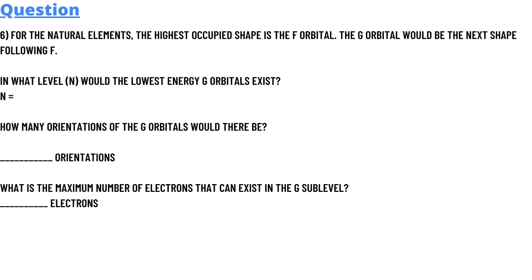Option six: For the natural elements, the highest occupied shape is the f orbital. The g orbital would be the next shape following f. In what level n would the lowest energy g orbitals exist? And how many orientations of the g orbitals would there be? What is the maximum number of electrons that can exist in the g sublevel?